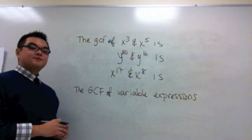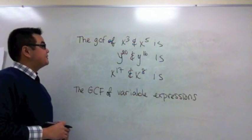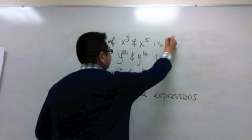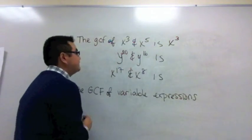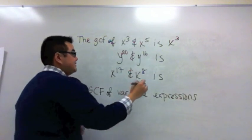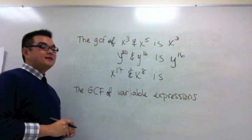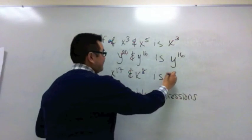To find the GCF of variable expressions, let's take a look at a couple of examples. The GCF of x cubed and x to the 5th is x to the 3rd. The GCF of y to the 20th and y to the 16th is y to the 16th. And finally, the GCF of x to the 17th and x to the 8th is x to the 8th.